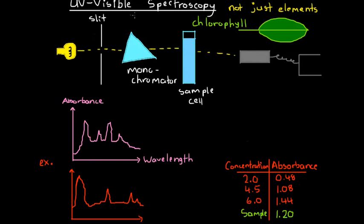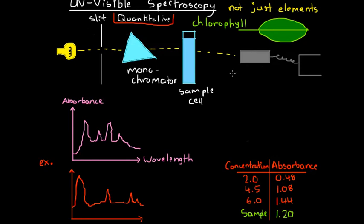UV visible spectroscopy is quantitative — it's nearly always used for quantitative analysis, dealing with amounts and concentrations, though it can also be used for qualitative identification of substances. If we want to quantitatively analyze the concentration of chlorophyll in a sample solution, the first step is to obtain a pure sample of chlorophyll — not the sample we're testing, but a separate pure sample.